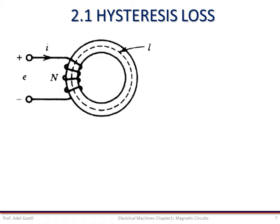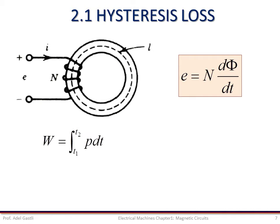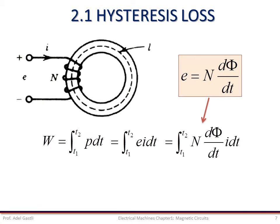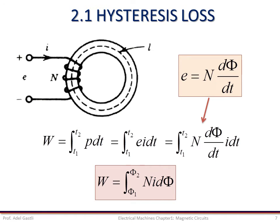Let us assume that the coil has no resistance and the flux in the core is phi. Then the voltage E across the coil can be obtained according to Faraday's law as E equal to the number of turns multiplied by the variation of the flux over time, d phi by dt. The energy transfer during an interval of time t1 to t2 is calculated as the integral of the instantaneous power p over the same interval t1 to t2. The instantaneous power is the product of the source voltage E and the current I. The energy transfer can be expressed as the integral of the MMF and I over the flux variation between phi1 and phi2, which correspond to time t1 and t2 respectively.